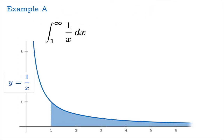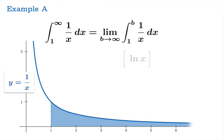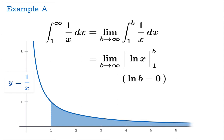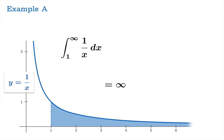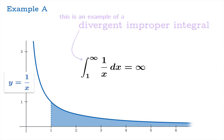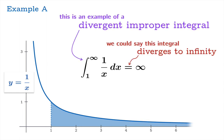Let's try the reciprocal function 1 over x, integrating from 1 to infinity. The antiderivative is the logarithm. We get logarithm of b minus logarithm of 1, then take the limiting value as b goes to infinity. Since ln(1) is 0, we're really looking at the limit of ln(b) as b goes to infinity. Recalling the graph of the logarithm function, this limit diverges to infinity. So this is an example of a divergent improper integral — the integral diverges to infinity because the limiting value is unbounded and increases without bound.